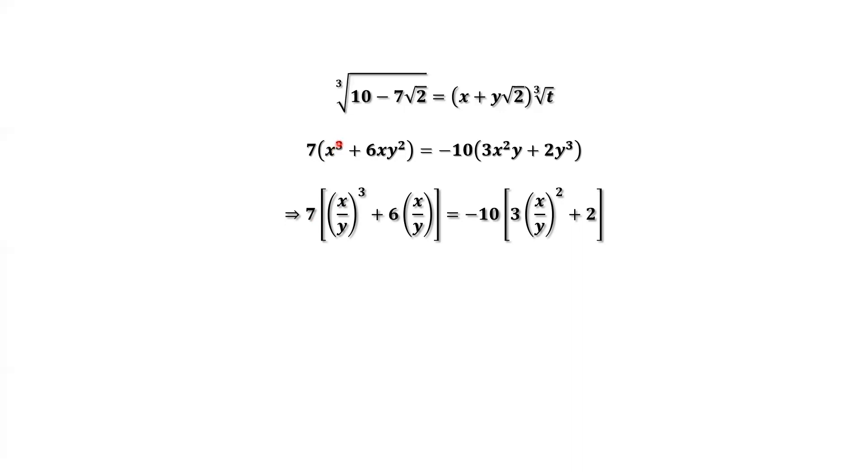Now we have x to the power of 3 divided by y to the power of 3 equals x over y to the power of 3. He has 6. xy squared divided by y to the power of 3 equals x over y. Equals negative 10 times. He has 3. x squared divided by y to the power of 3 equals x over y, then to the power of 2. y to the power of 3 divided by y to the power of 3 equals 1. This part should be 2.